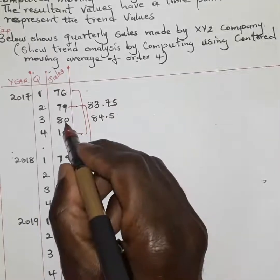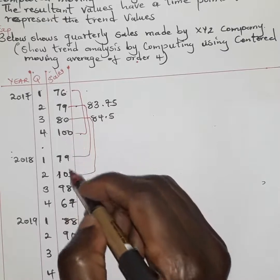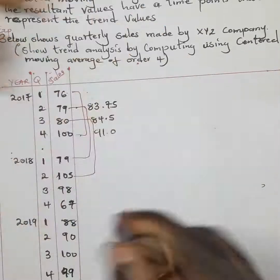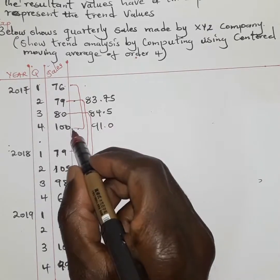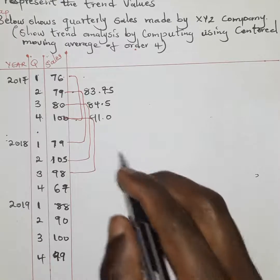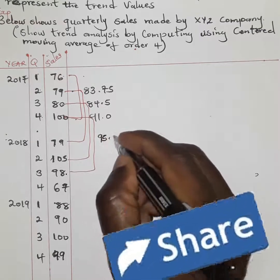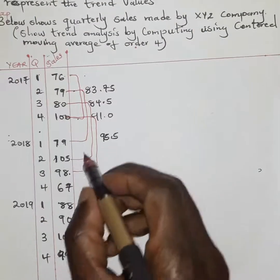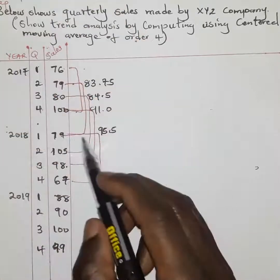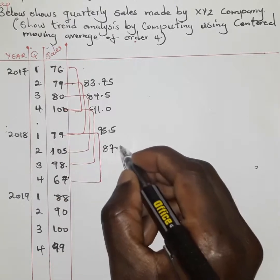Moving to the next set of four values starting from the third position — we add the four values and divide by four, getting 91.0. The next set of four values gives us 95.5. The following set, adding four values and dividing by four, gives 87.25.